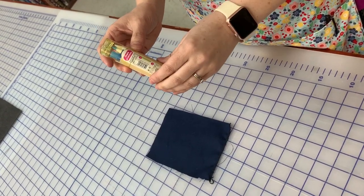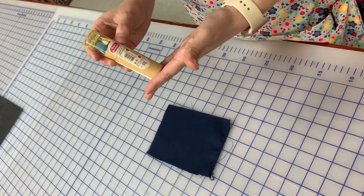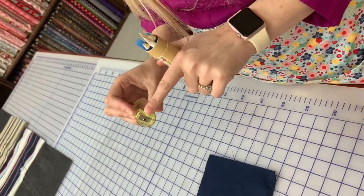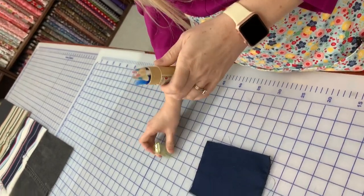So with the chalk pencils, it comes in a handy dandy little travel case here that you take the top off, which has the pencil sharpener on there for you built in, which is really neat.